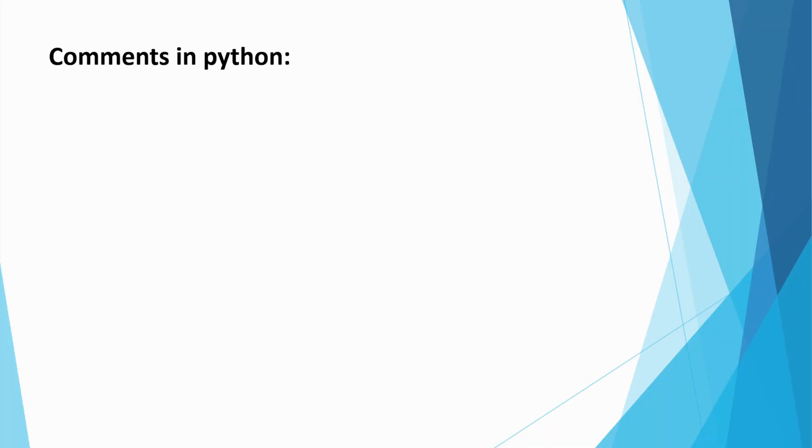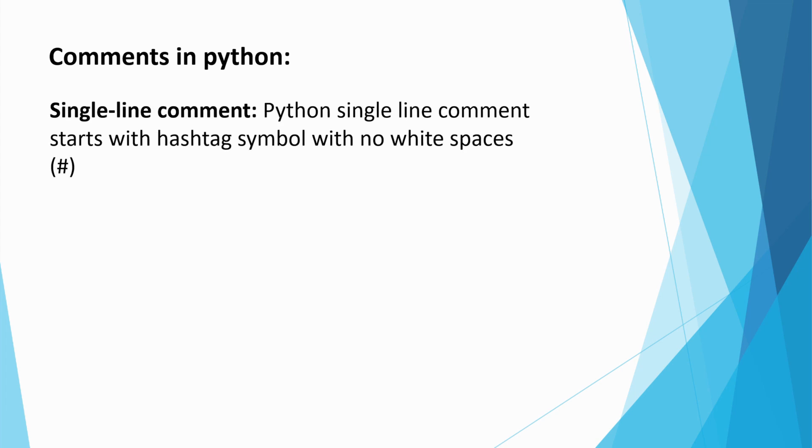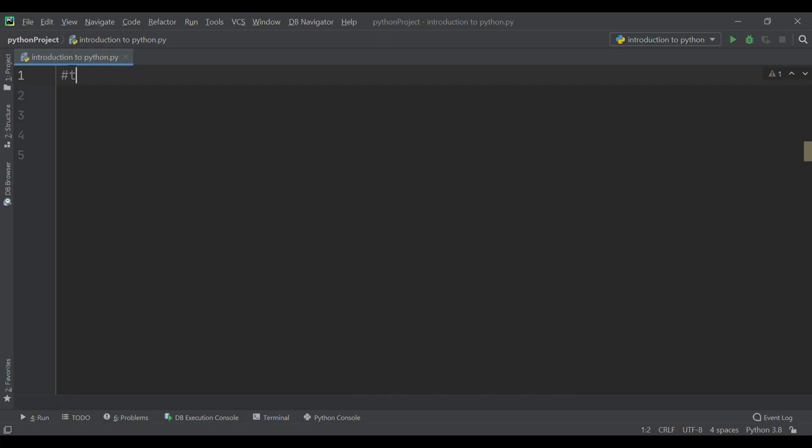Comments in python are of two types: single line comment and multi line comment. Python single line comment starts with a hashtag symbol with no white spaces. This is an example of a single line comment.